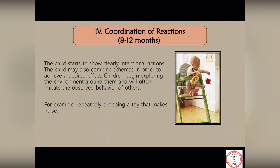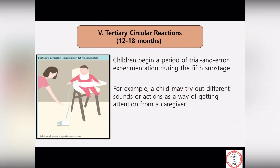The fifth sub-stage is between twelve months to eighteen months — that is, one year to one and a half years. At this stage the baby will experiment with his actions in order to get attention from his caregiver, for example by banging utensils on the floor or throwing toys on the floor so that the caregiver will pick them up.